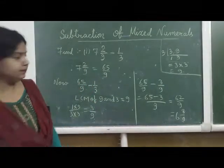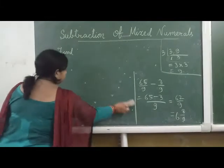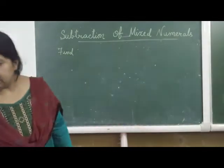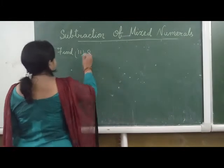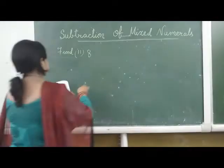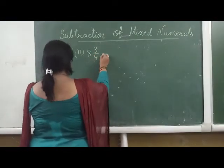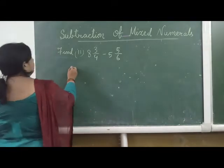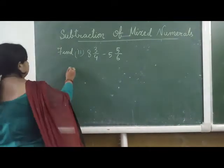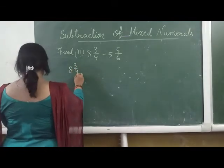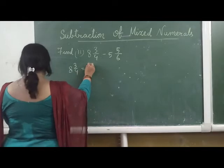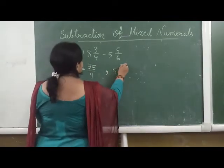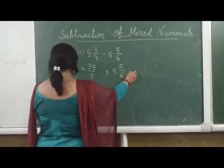The next example is: 8 whole 3 by 4 minus 5 whole 5 by 6. First we have to change these mixed fractions into improper fractions. So 8 whole 3 by 4 means: 8 multiplied by 4 is 32, plus 3 is 35, giving 35 by 4. And 5 whole 5 by 6 gives 35 by 6.